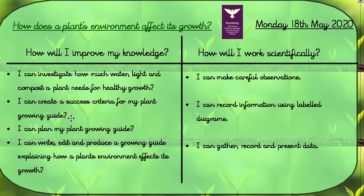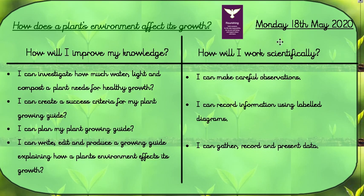This week, which is our final week of our learning journey, this is how we're going to improve our knowledge. We're going to investigate how much water, light, and compost a plant needs for healthy growth — and that's what we're going to be doing today. Then we're going to create a success criteria for our plant growing guide, plan it, and then write, edit, and produce it on Thursday and Friday. We're going to make careful observations, record information using a labelled chart, and gather and present data in our guide. So we're still working really scientifically and being the experts.